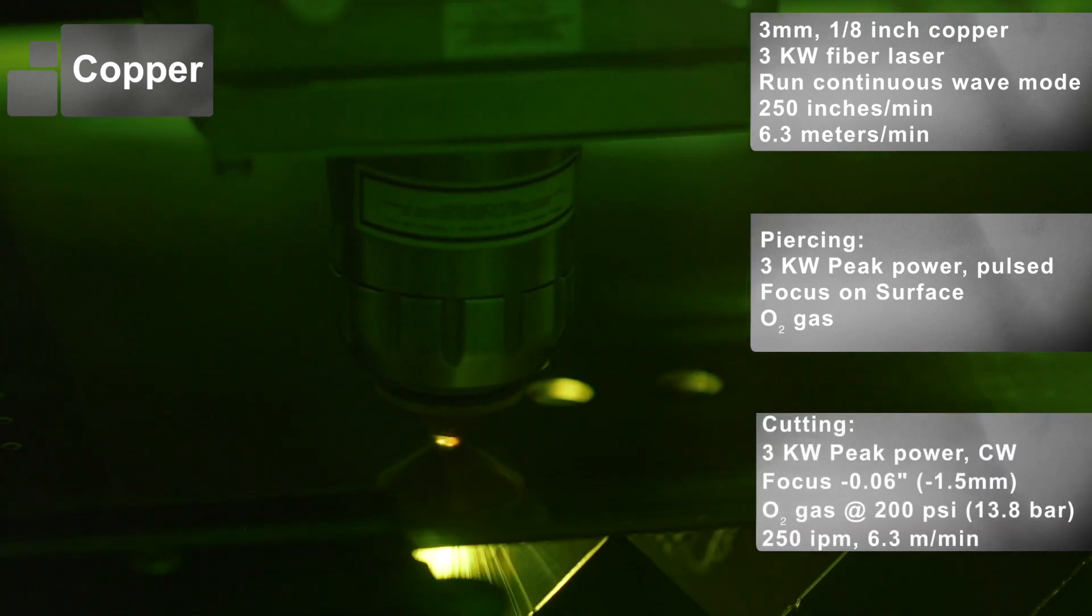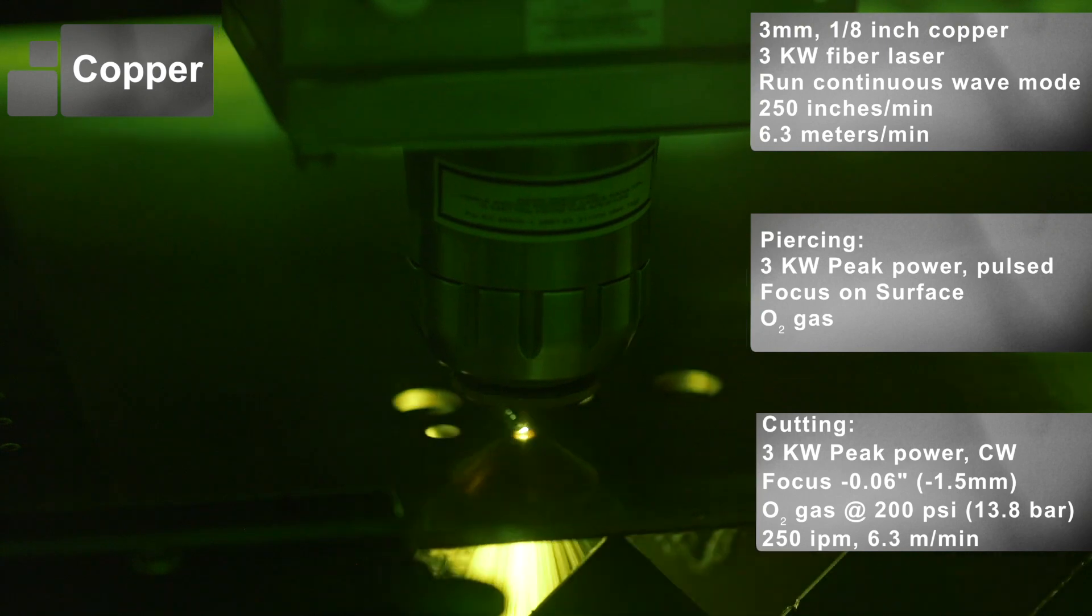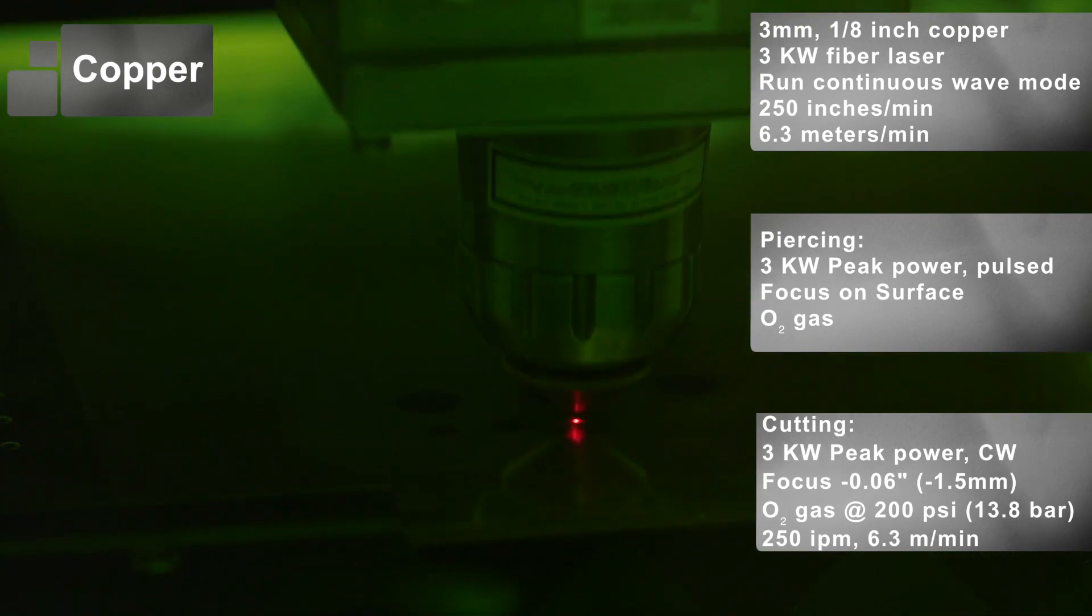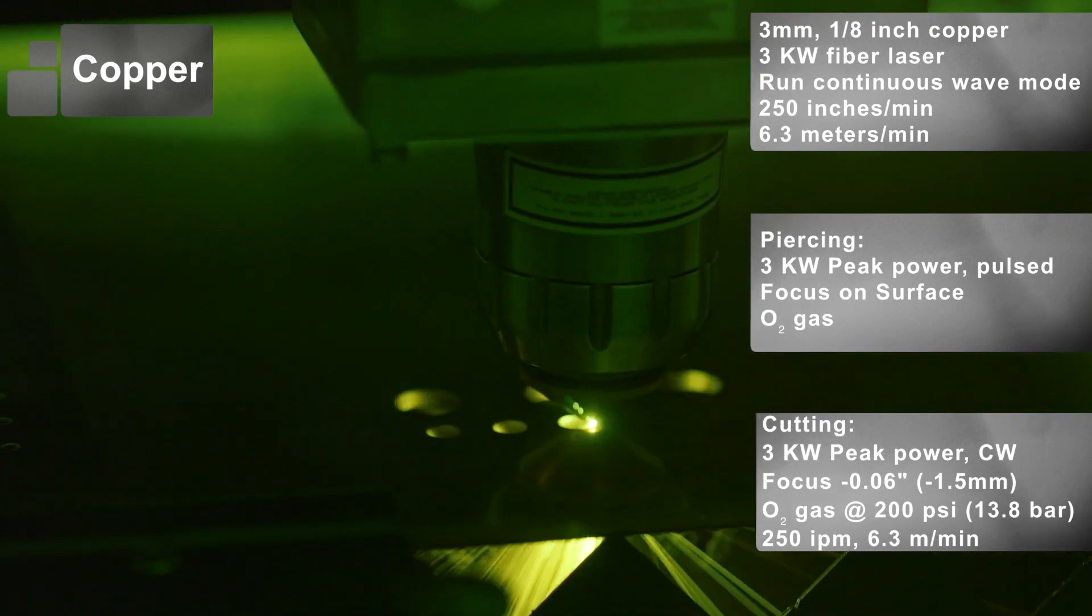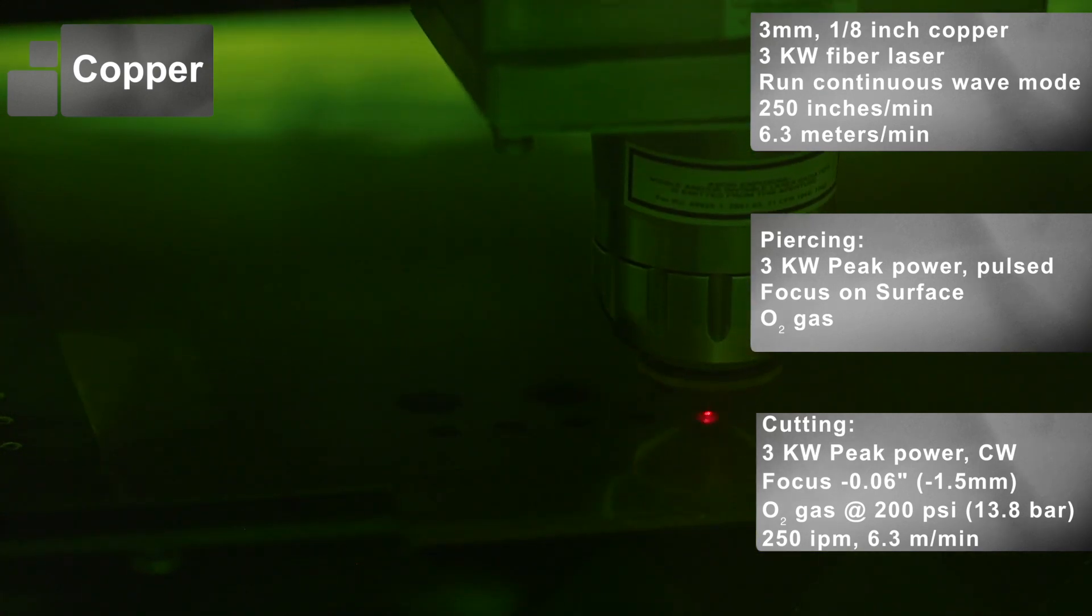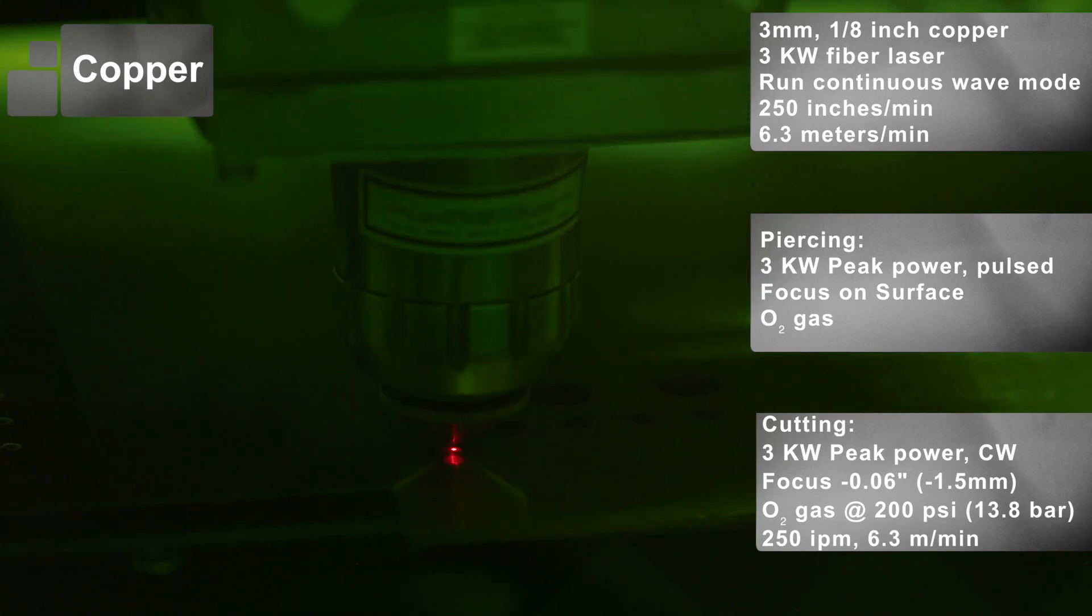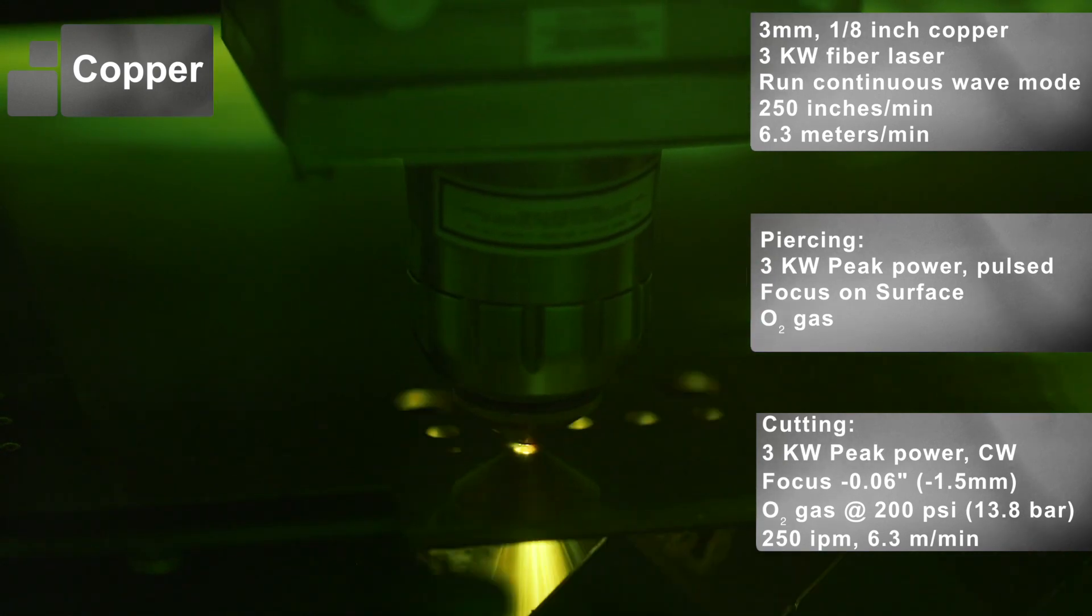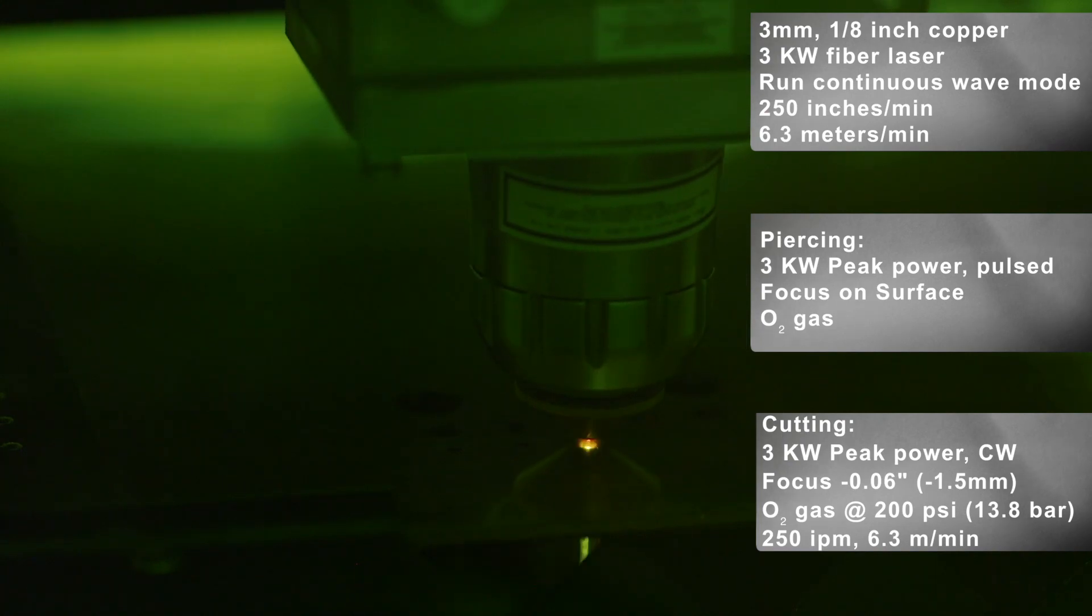For the cutting stage, we focus down about 0.6 inches below the surface of the material and the laser is in the continuous wave mode or CW mode and running it at 250 inches per minute or about 6.3 meters per minute.